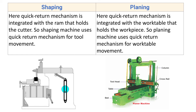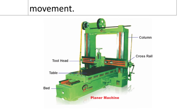In the planer, the quick return mechanism is integrated with the work table that holds the workpiece — the planing machine uses the quick return mechanism for work table movement. In the planing machine, cutting action is also performed only during the forward stroke and no cutting is performed during the return stroke. Again, the quick return motion mechanism minimizes return stroke time, but here the difference is that since reciprocating motion is given to the table, the quick return motion mechanism is integrated with the table.